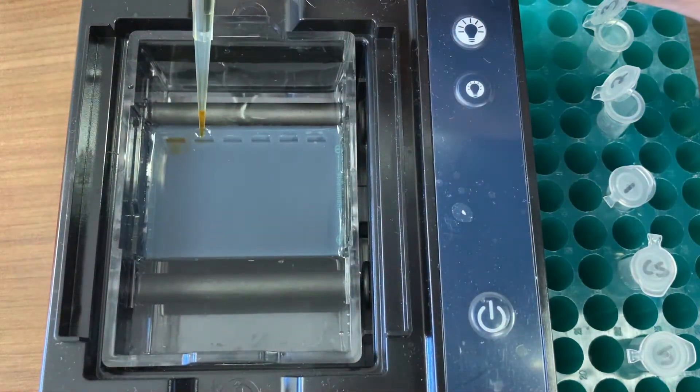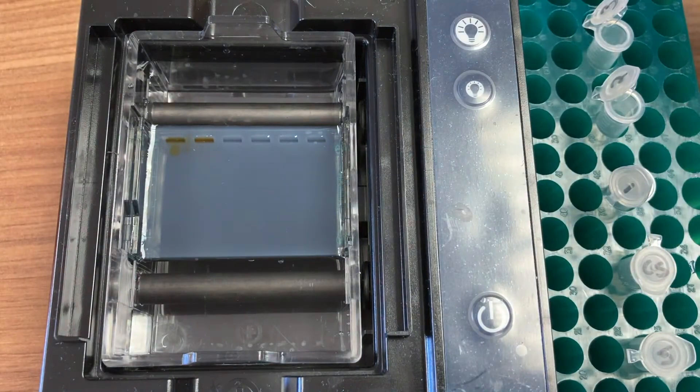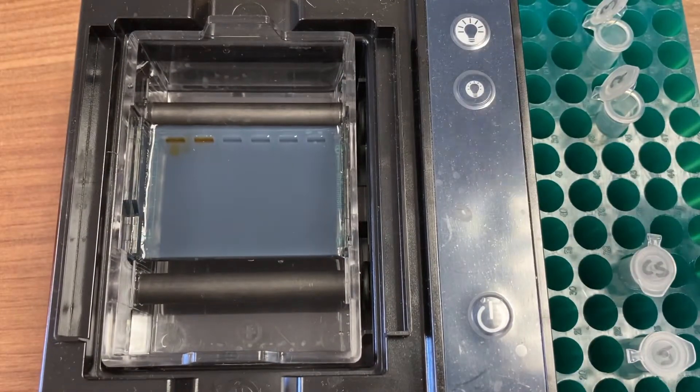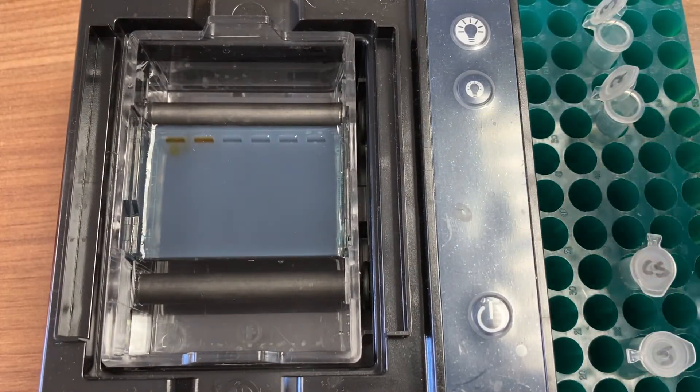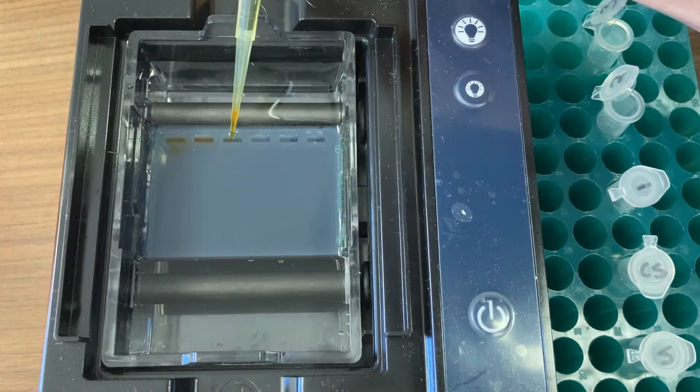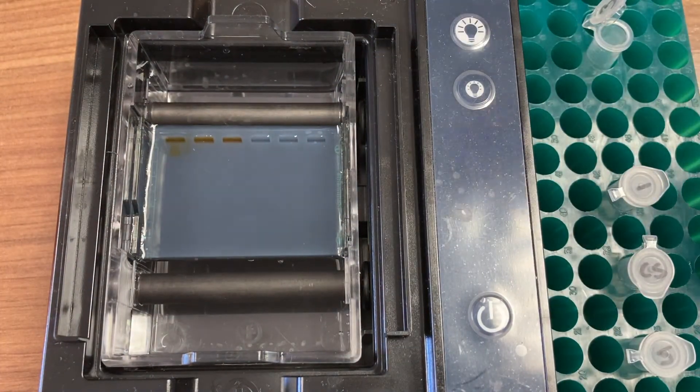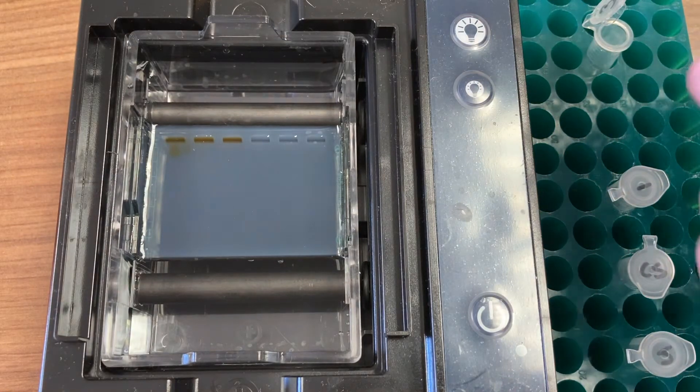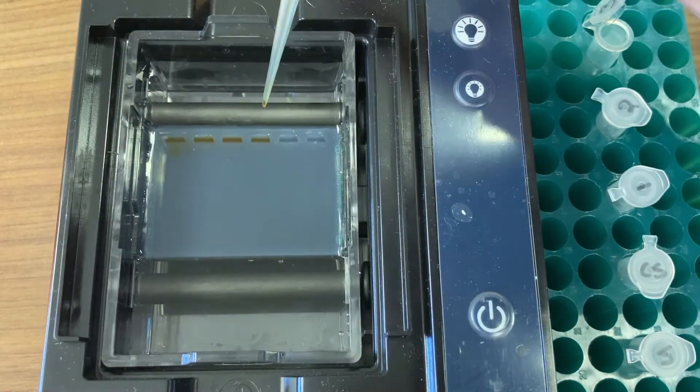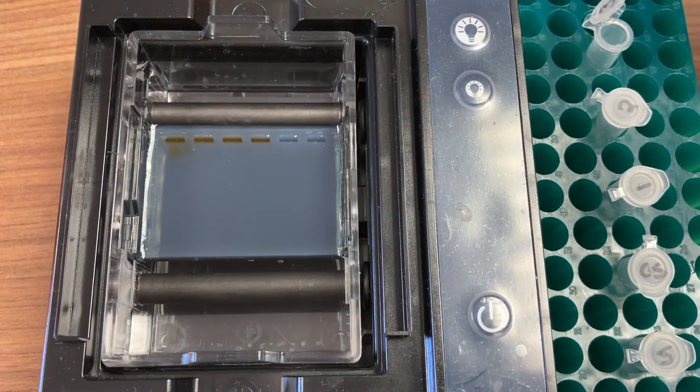We will be running electrical current through the gel, and you may be able to see a positive sign near the bottom of the system. That's important because DNA has an overall net negative charge, and it's going to move towards the positive end of the box. Remember this when you're looking at your results.